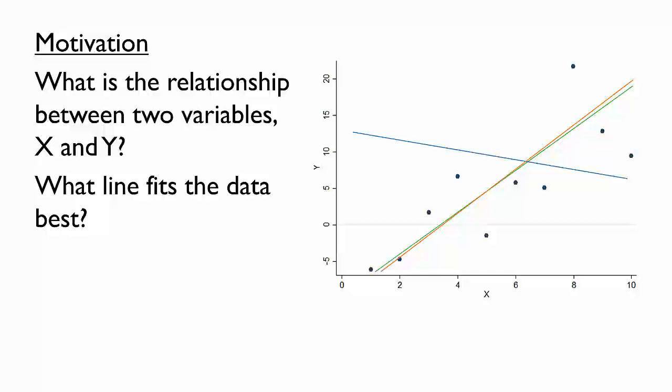No straight line can go through every point, so which of all the possible lines we might draw is as close as possible to all of the data points?